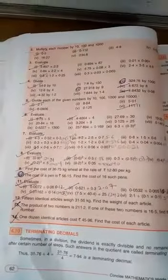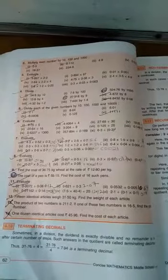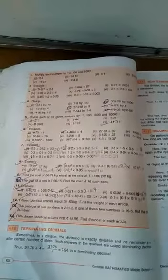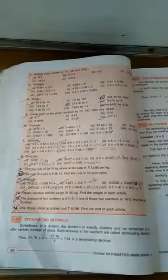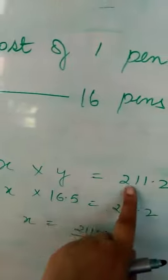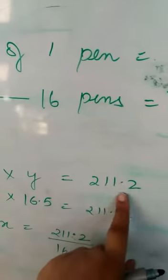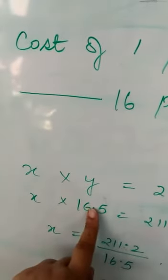Now this is a different one, children. The product of two numbers is 211.2. Product is given. If one of these two numbers is 16.5, find the other number. There are two numbers - let the numbers be x and y, and their product is 211.2.